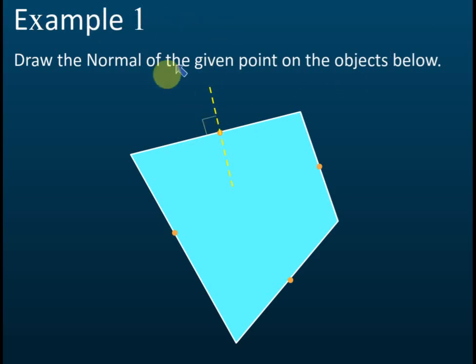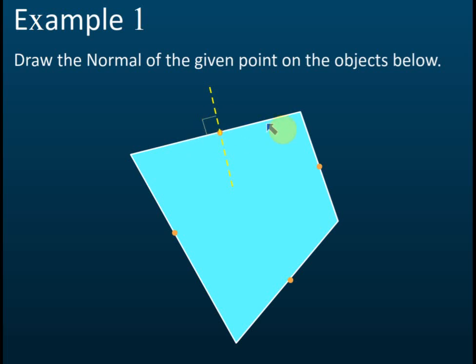In Example 1, they want you to draw the normals at the given points on the object. When you draw the normal, make sure it is at right angles to the plane — this line is 90 degrees with the plane — and it passes through the point of refraction. That's how we draw the normal. If you have a ruler, you can use it to help you draw the normal.